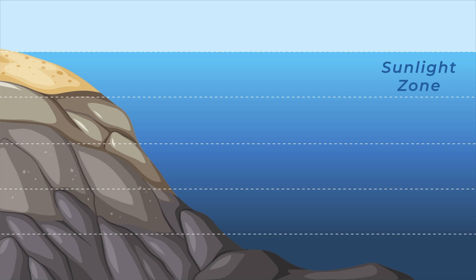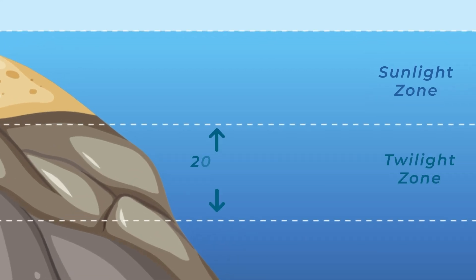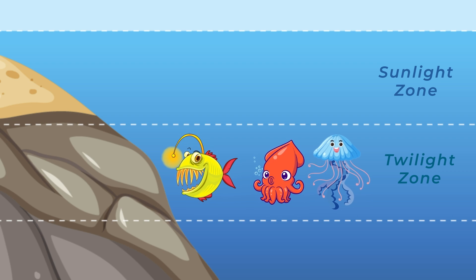Now let's dive deeper into the twilight zone. This zone starts from 200 meters and goes all the way down to 1000 meters. It's called the twilight zone because only a little bit of sunlight can reach here. It's like a spooky dim ocean. In the twilight zone you'll find animals like squid, jellyfish, and even some fish that glow in the dark.